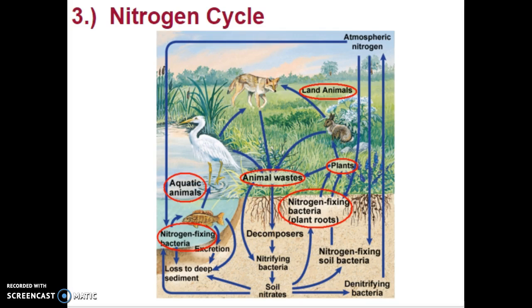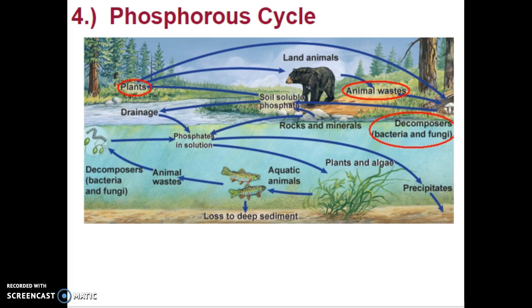The phosphorus cycle works much the same way. Plants get their phosphorus from the soil; an herbivore eats the plant and gets its phosphorus; then a carnivore or omnivore eats the herbivore and gets its phosphorus that way. Animal wastes also contain phosphorus that can be recycled by decomposers back into the soil. All of these cycles — carbon and oxygen, nitrogen, and phosphorus — are cycled between both aquatic and terrestrial ecosystems. This has been Part 2 of Chapter 2, Principles of Ecology.